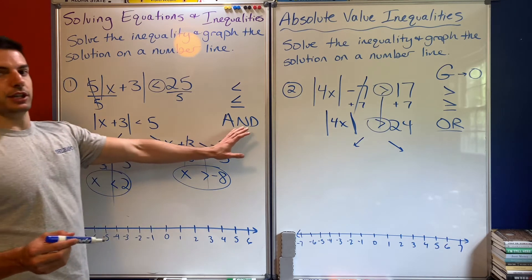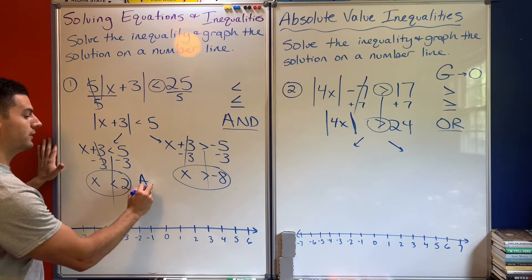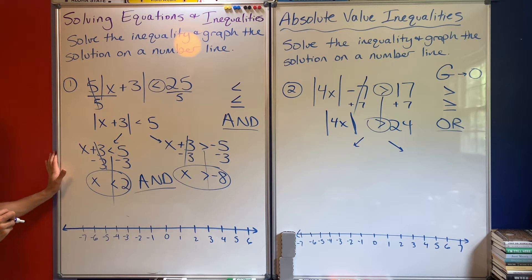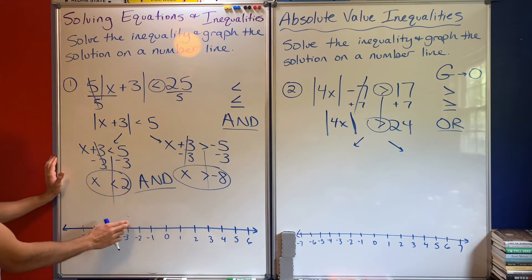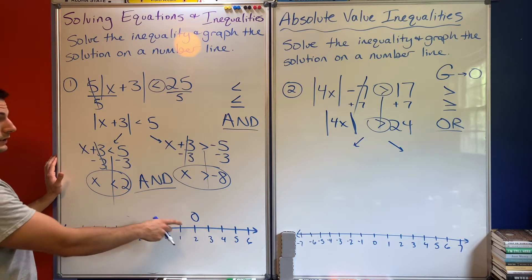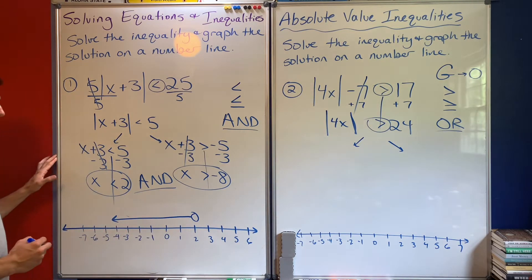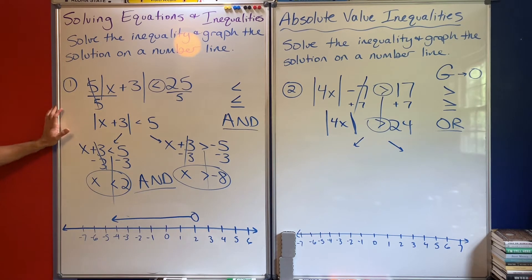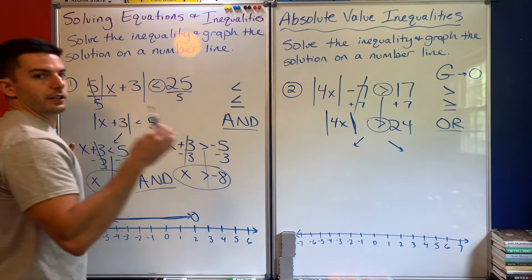Let me graph this, remembering that this is an 'and' solution. So my official way of writing this is x is less than 2 and x is greater than negative 8. Graphing on the number line: x is less than 2 gives an open circle at 2 with an arrow going left. x is greater than negative 8 gives an open circle at negative 8 with an arrow going right. You can see there's an overlap between these two arrows.